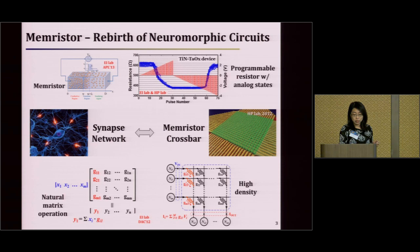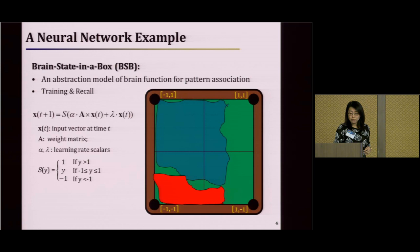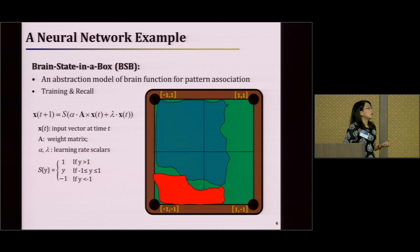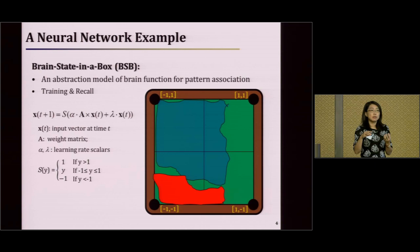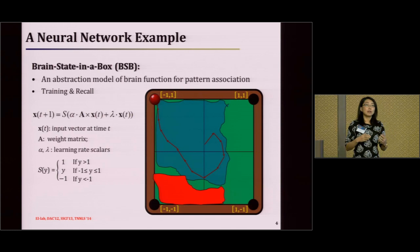A couple of years ago, we initiated work starting with the Brain State in a Box model. It's an abstract model for brain functions, for pattern associations, and can do training and recall. The recall function essentially is a matrix-vector operation. We have input vectors that through multiple iterations supposedly converge to positive and negative ones. We did early evaluations to see how we can implement such structures through memristor crossbars.